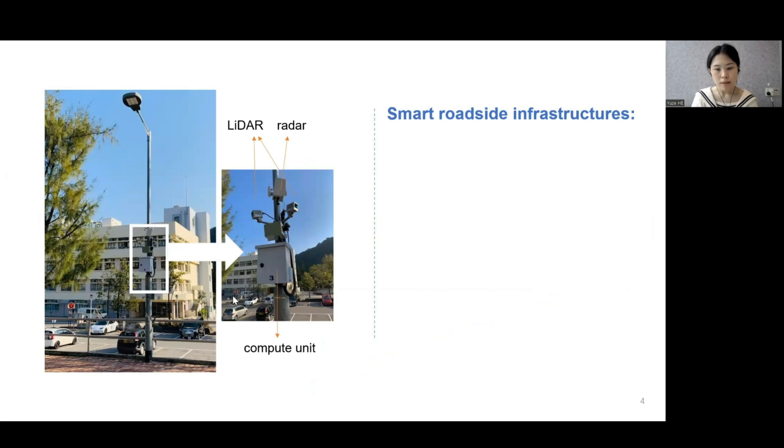These smart lampposts are equipped with sensors which usually have wider and almost unobscured view. They can help to extend vehicle's sensing range and improve their sensing quality.